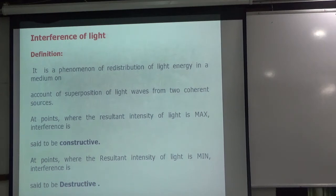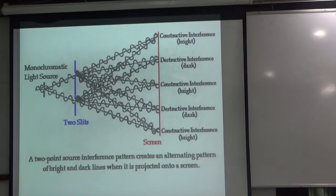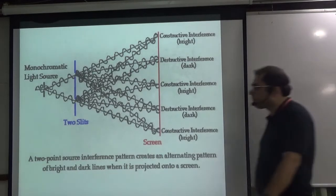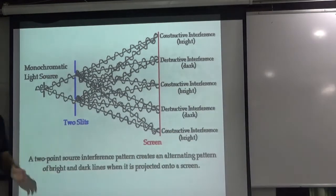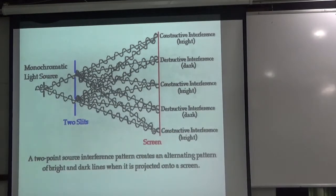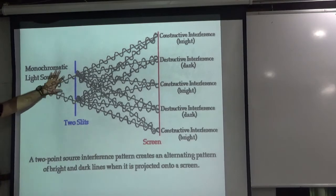The superposition of light waves from two coherent sources. We have a definition now. Let's first look at a diagram — it's a very good diagram that has been made. Now let's see. This is a very big diagram in which it has been shown.